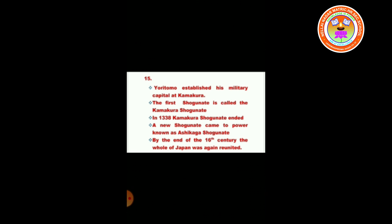Yoritomo established his military capital at Kamakura. The first Shogunate is called the Kamakura Shogunate. In 1338, the Kamakura Shogunate ended. A new Shogunate came to power known as the Ashikaga Shogunate. By the end of the 16th century, the whole of Japan was again reunified.